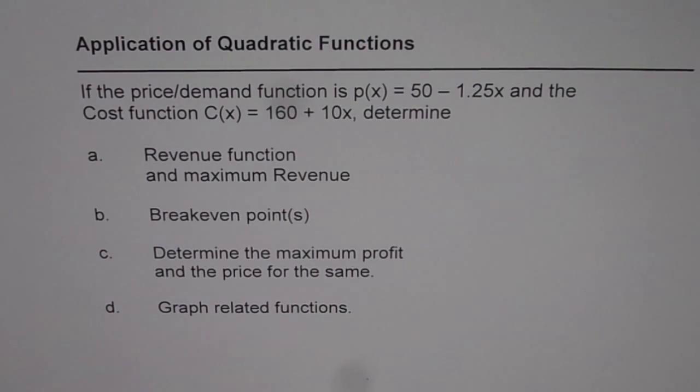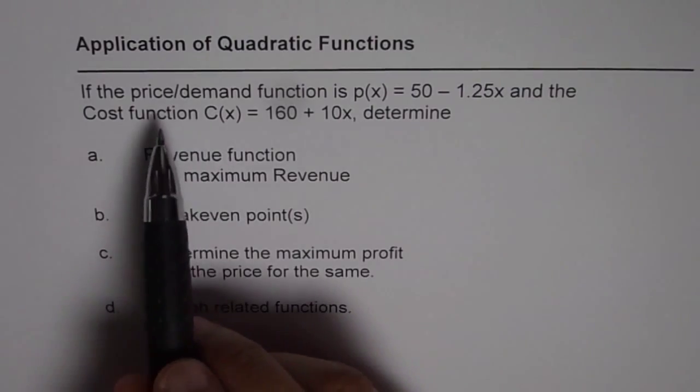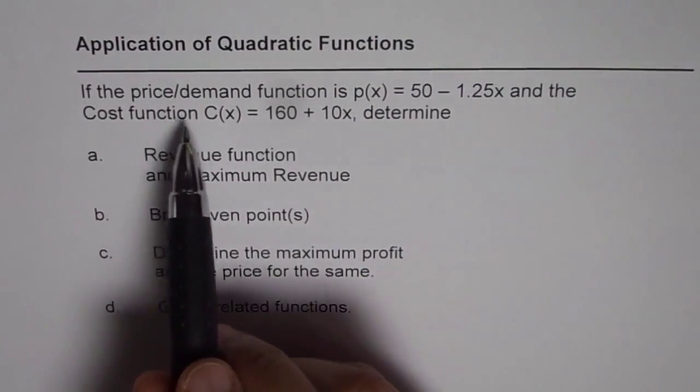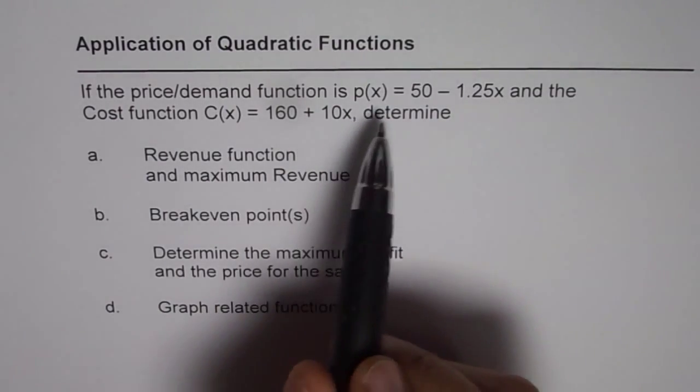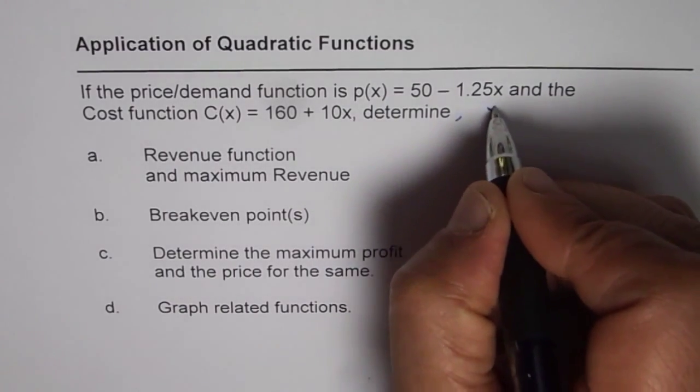Let me give you basic definitions and the approach. When we say revenue function, it really means price function times number of items sold. Now in this function which we have defined, x is number of items.